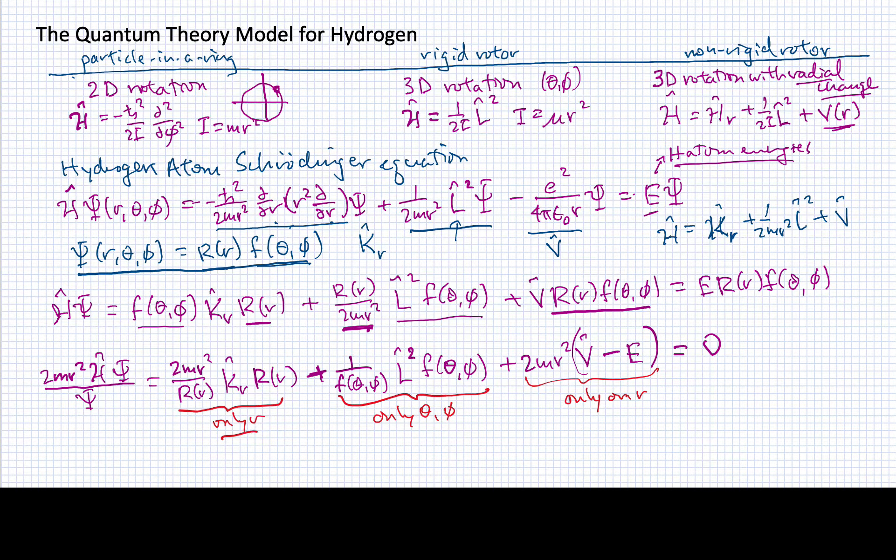Since these pieces depend only on r, if I start varying r, it doesn't have any effect on this piece. That means the effect of varying r must equal a constant. Similarly, if I vary theta or phi, I'll change this middle term but have no effect on these two terms. That one must also equal a constant.